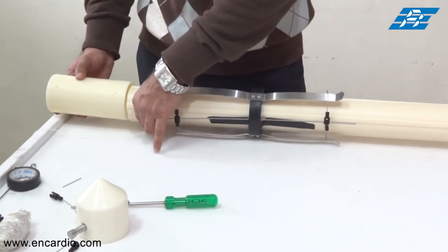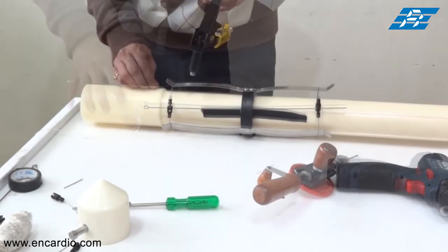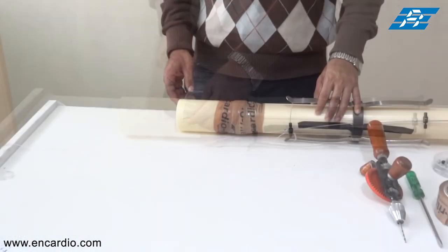Next, a coupling will be used to join another ABS casing. It will be fixed by drilling four holes to fix the rivets at right angle and seal it with the mastic tape and then with the BOPP tape.